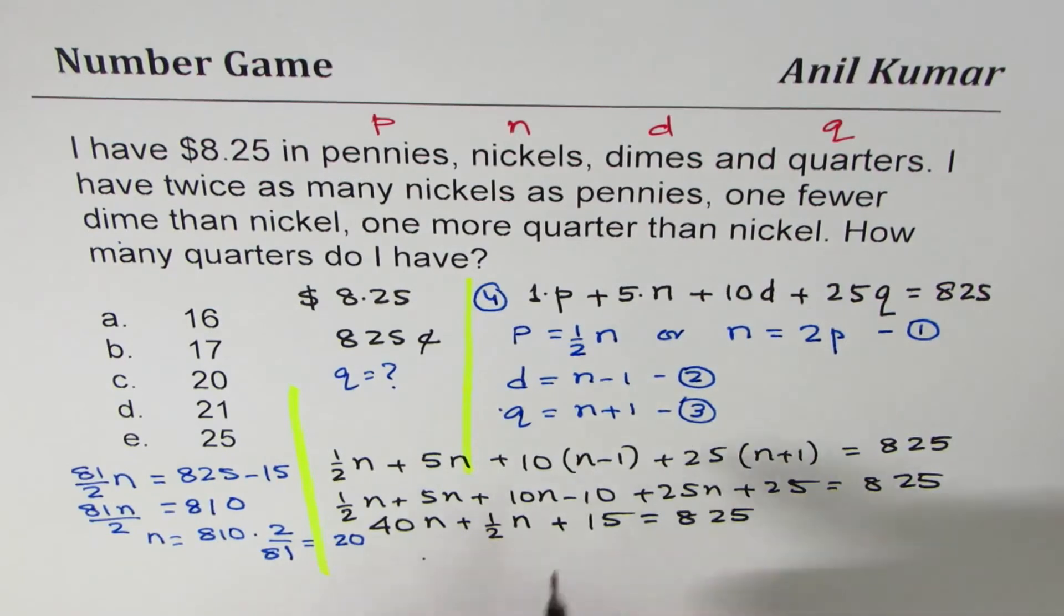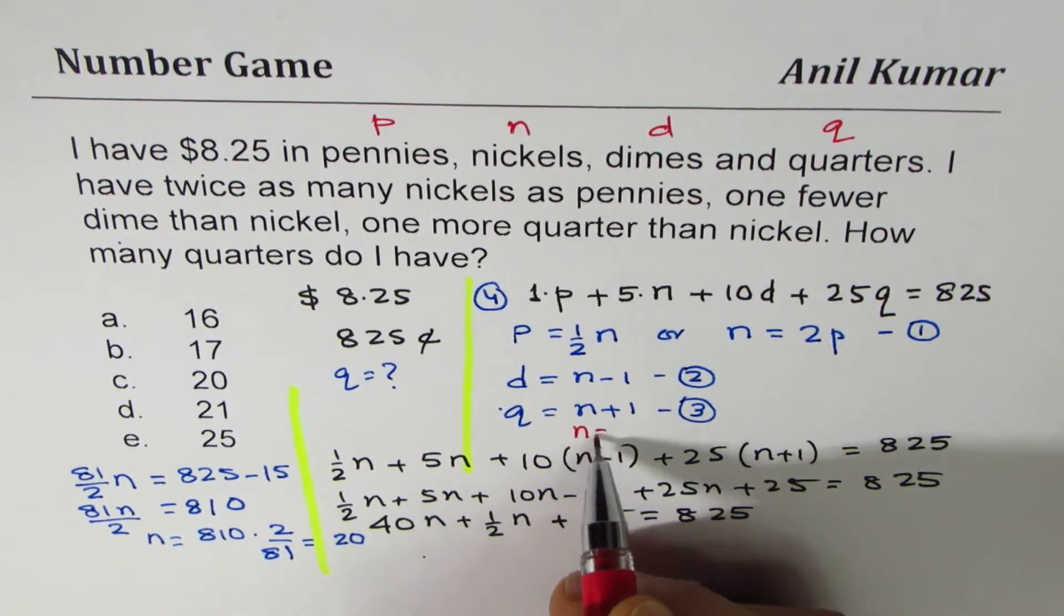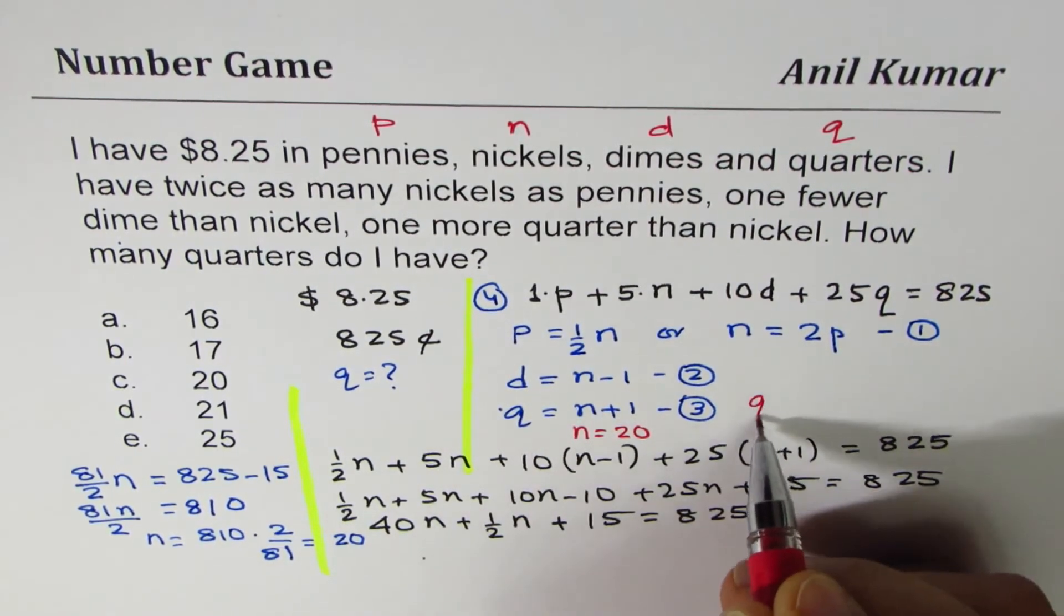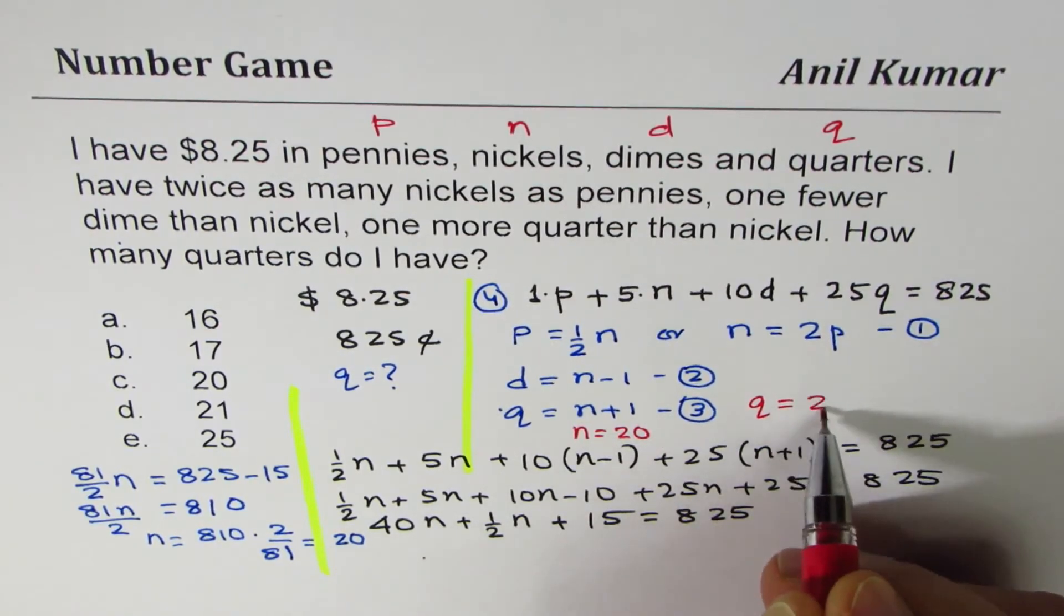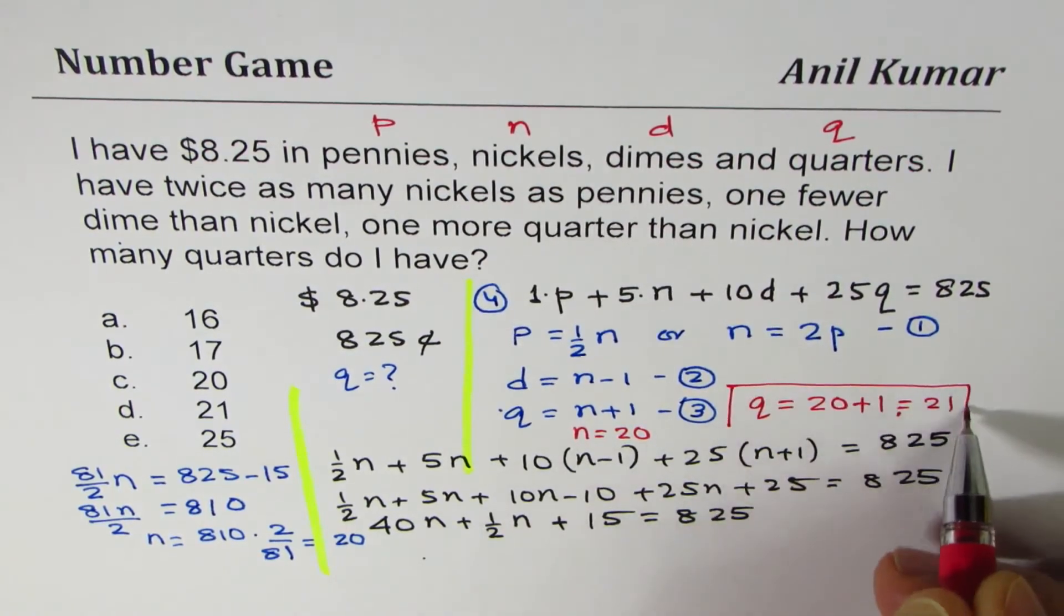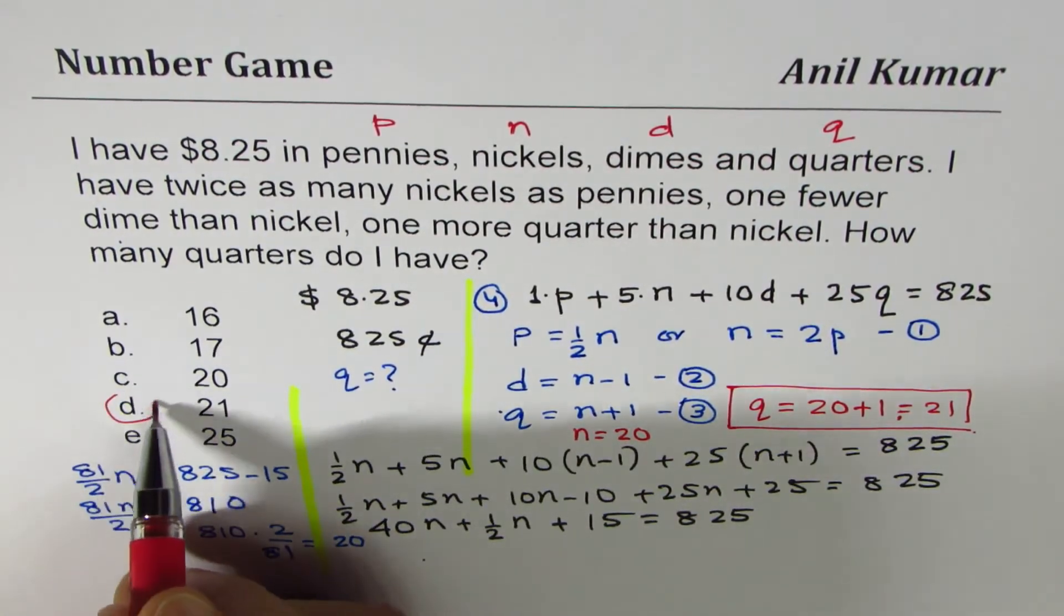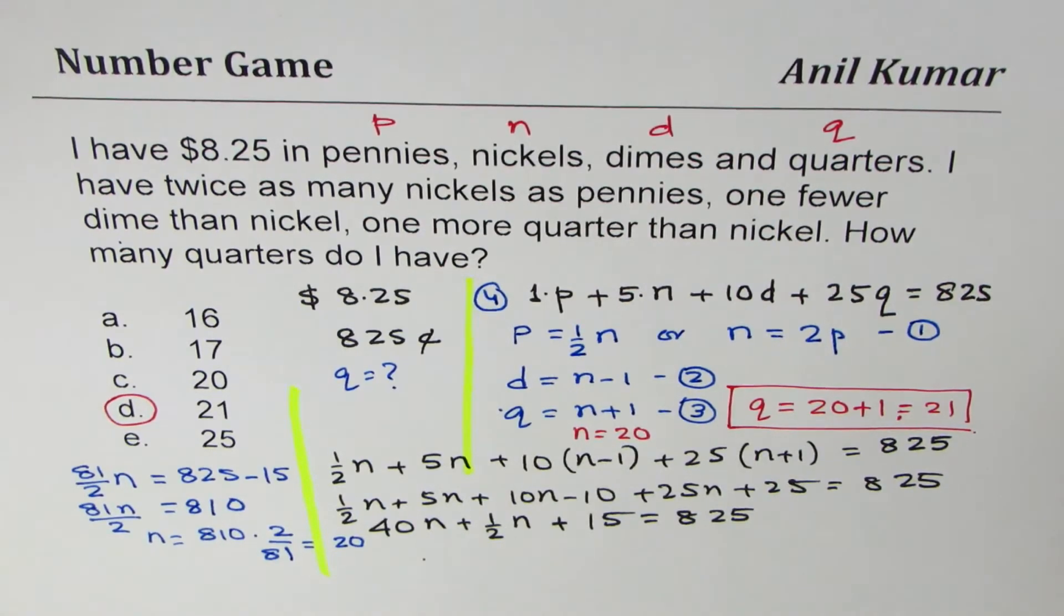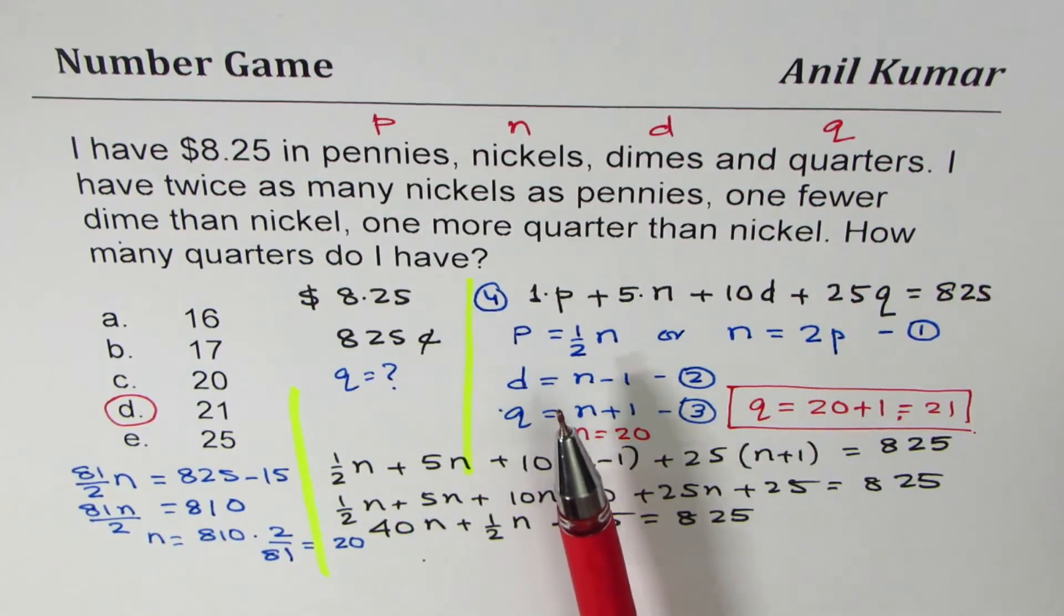We get nickels as 20. N equals 20. How many quarters? Quarters will be 20 plus 1, which is 21. That is how you could solve this question. We have a choice here, D. I hope that works. The idea here is, whenever you have such a question, write all the relevant equations. Combine them so that you get equation in one variable and then solve. I hope that works. Thank you and all the best.